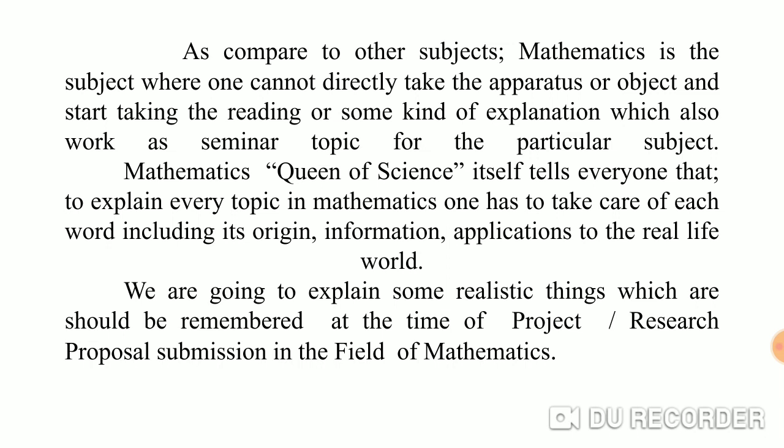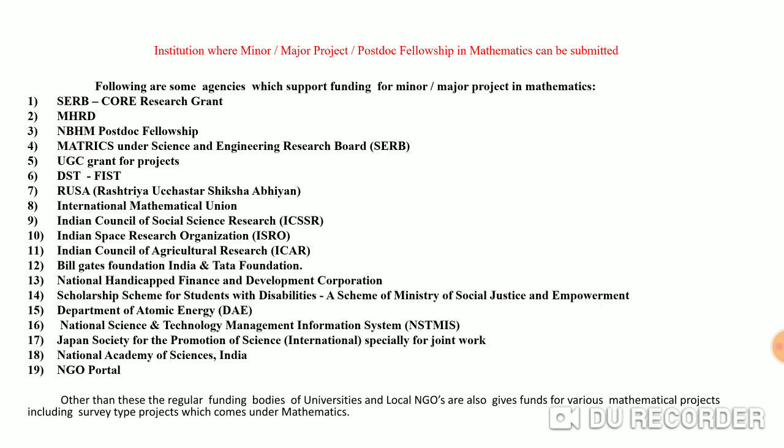Let's see first what are some research grants from where one can get funding for mathematics proposals in India. The institutions where minor or major projects and postdoc fellowships in mathematics can be submitted: the first one is CSIR core research grant, then MHRD, then NBHM postdoctoral fellowship — this is especially for mathematics, with the condition that you complete your PhD and five years after PhD with good publications. Then we have UGC grants, some projects under UGC core research grant, and the Department of Science and Technology.